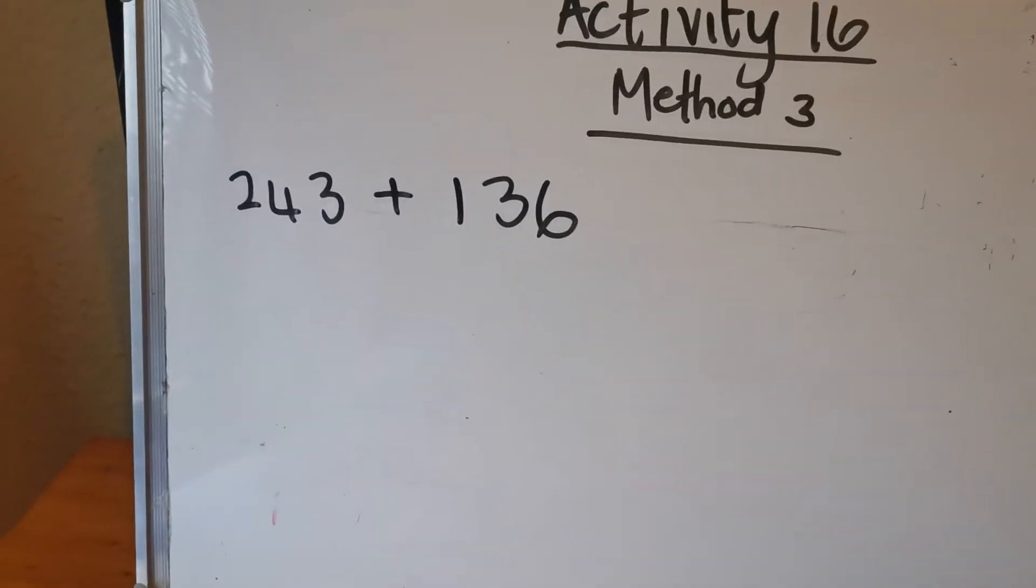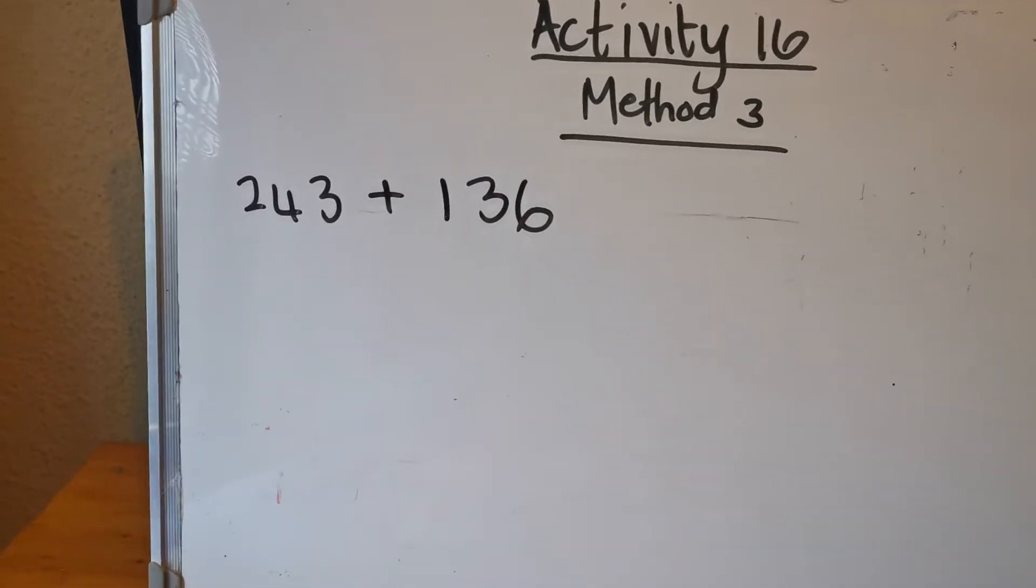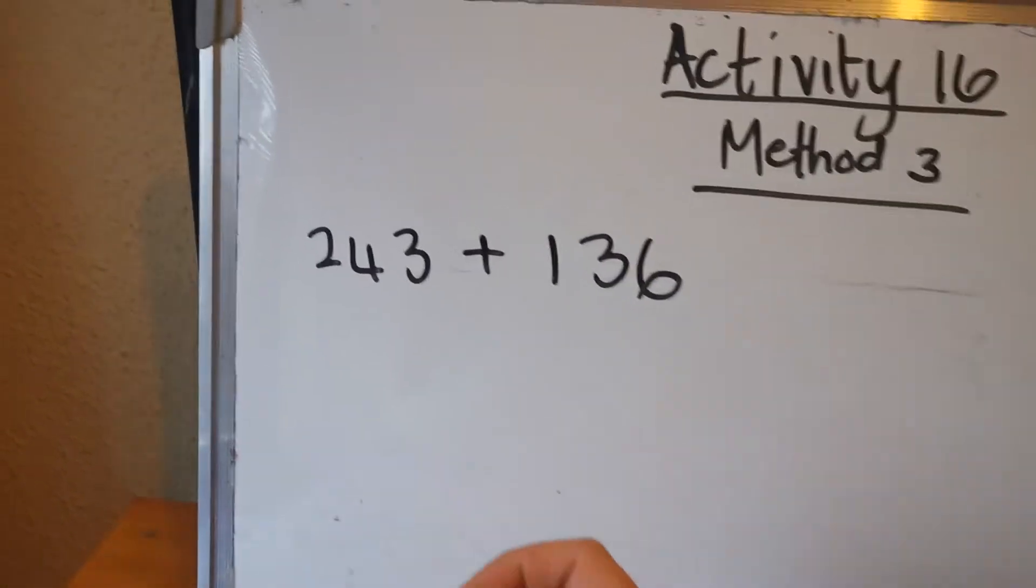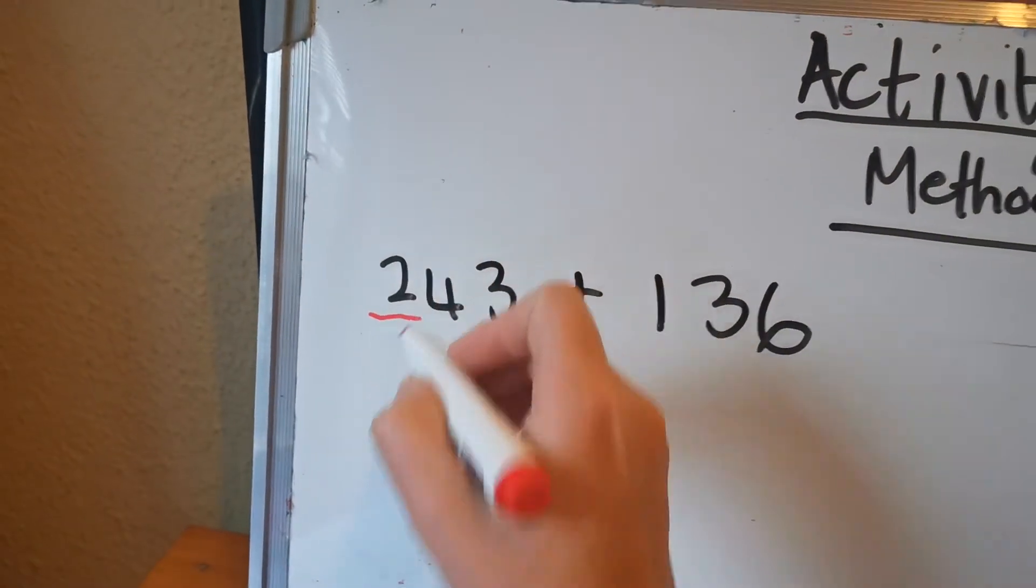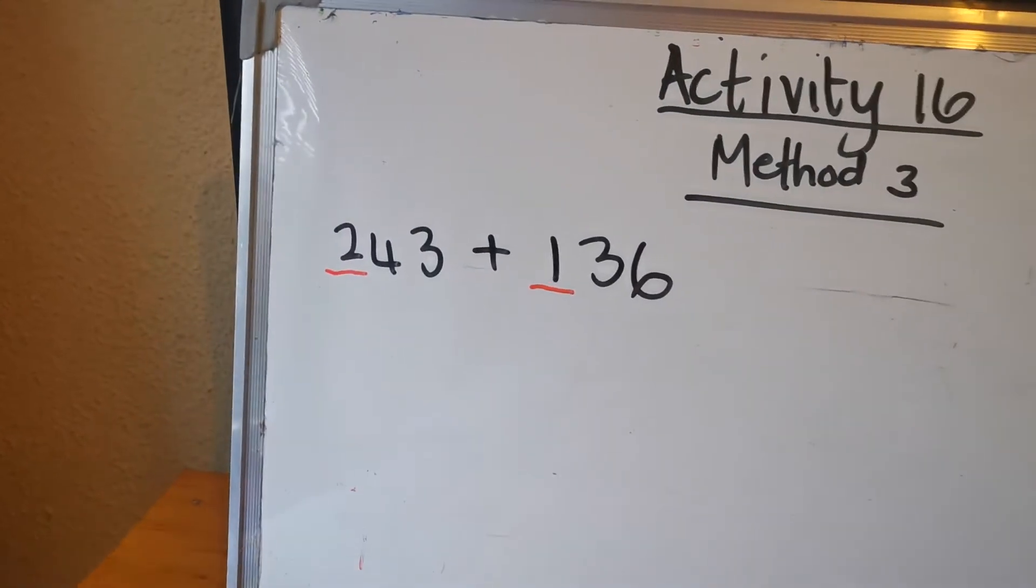So you're going to take three colors and in each number I want you to underline the hundreds, the tens and the units. So in 243 the hundreds will be the 2 for 200. And in 136 it will be the 1 for 100.